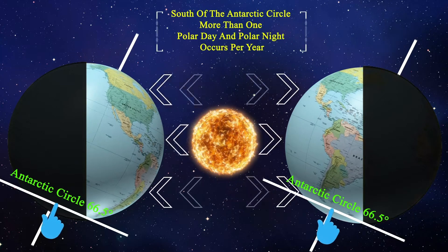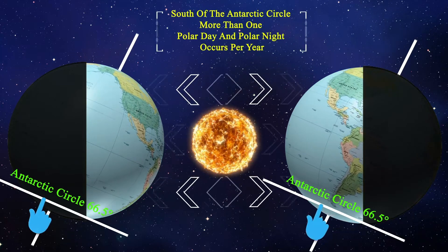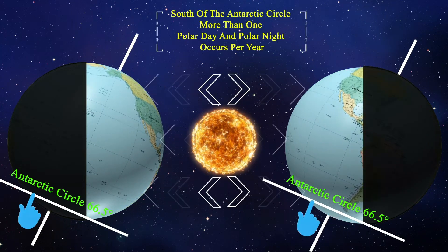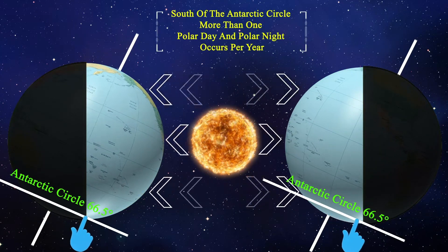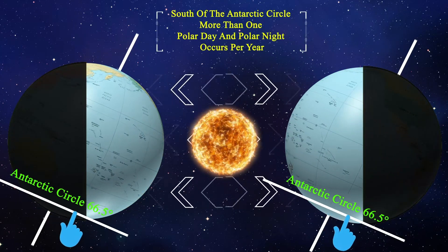South of the Antarctic Circle, more than one polar day and polar night occurs per year.